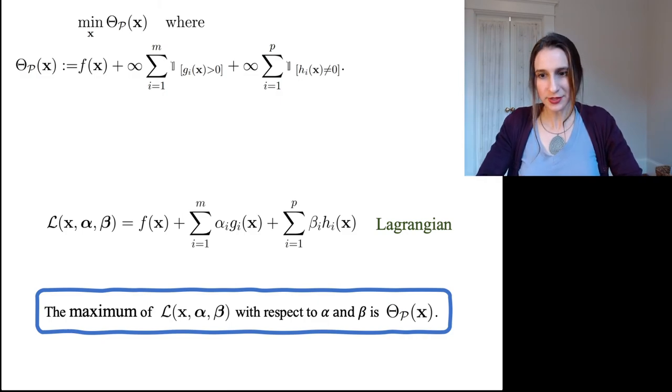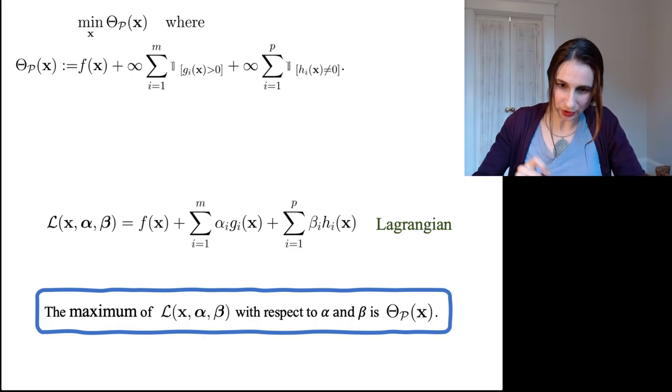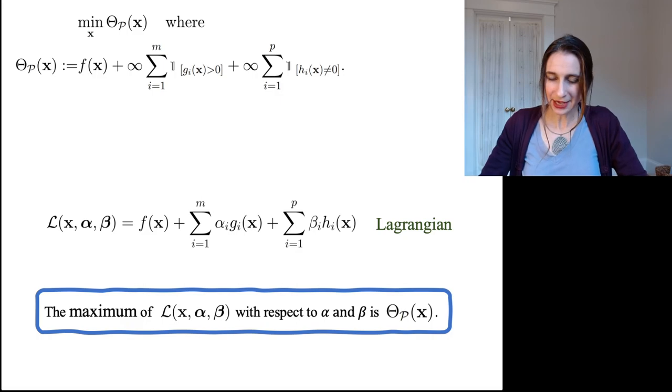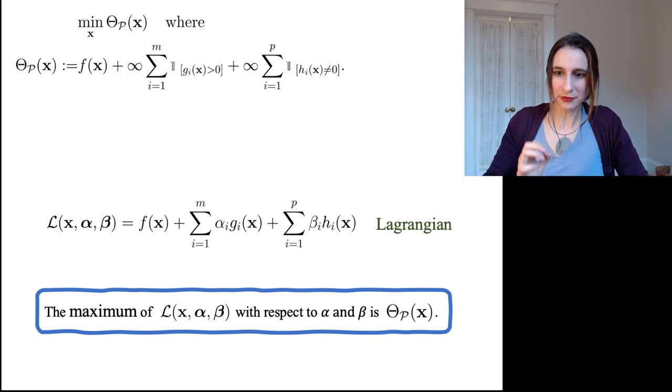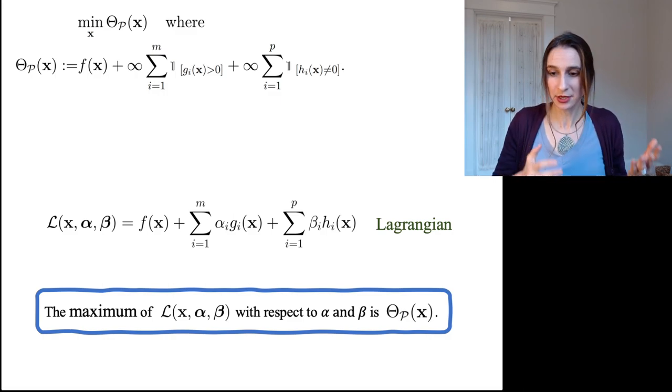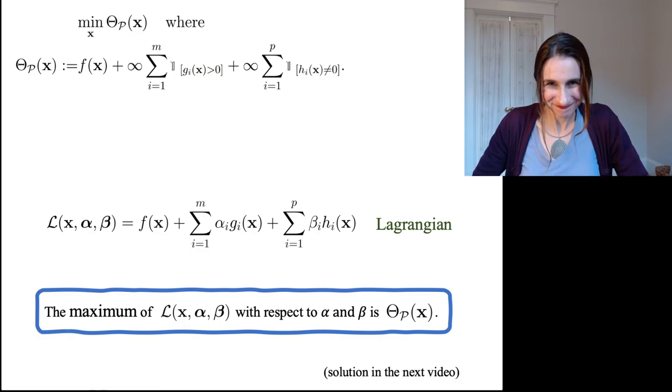Now, as it turns out, which is really interesting, the maximum of the Lagrangian with respect to alpha and beta is actually equal to the primal theta p. I know, it seems so strange, right? Why would this be true? But as it turns out, there are settings for alpha and beta. There are choices for alpha and beta you can make that will force the maximum of the Lagrangian to be equal to the primal theta p. And I'll show you how that works in the next video. Thanks.